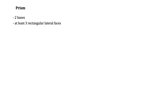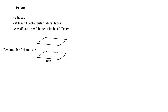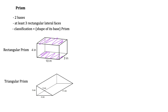A prism is going to have two bases and at least three rectangular lateral faces. We classify and name it by the shape of its base followed by the word 'prism.' This shape has two bases and four lateral faces going around, so we call it a rectangular prism. The triangular prism has triangles as its bases because the rectangle cannot be the base — it doesn't have a matching parallel opposite side. So the triangles are the bases, and all three other lateral faces are rectangles.